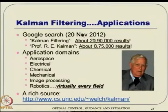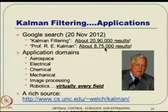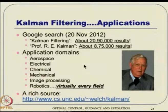A Google search for 'Kalman filtering' returns about 2,090,000 results, and searching 'Professor R.E. Kalman' gives about 875,000 results — you can see the impact worldwide. Application domains include aerospace, electrical, chemical, mechanical, image processing, robotics, and virtually every field. A rich resource can be found at the University of North Carolina repository on Kalman filtering, where you can also download his first fundamental paper.